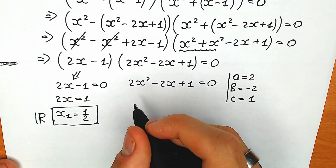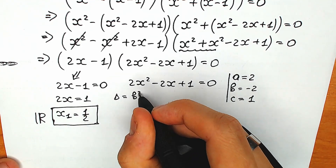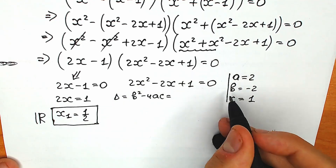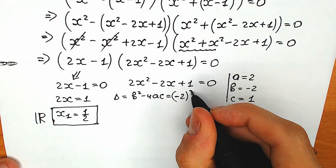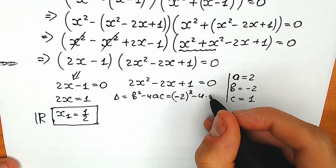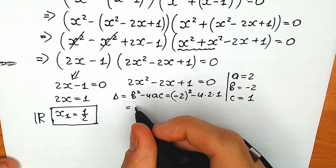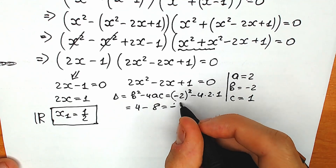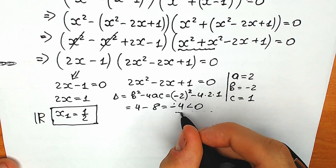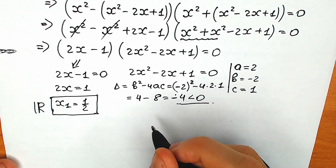Using the discriminant: D equals b squared minus 4ac. Plugging in: minus 2 squared minus 4 times 2 times 1 gives us 4 minus 8, so D equals minus 4. Since the discriminant is less than zero, we will have two complex roots.